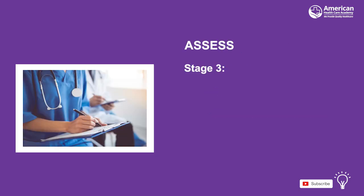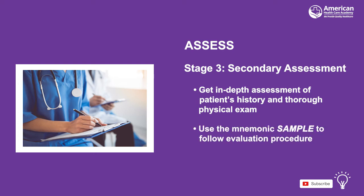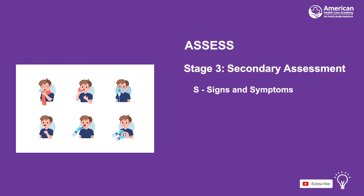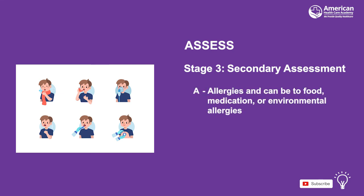The third stage of the evaluation process is the secondary assessment. The goal of the secondary assessment is to obtain a more in-depth assessment of the patient's history as well as a thorough physical exam. The mnemonic SAMPLE can be used to follow the evaluation procedures. S is for signs and symptoms, indicated by problems breathing, altered consciousness, anxiety and agitation, fever, decrease in appetite, diarrhea and vomiting, and bleeding. Finding some or even one of these may indicate a problem. Before treatment is applied, consider A of SAMPLE. A is for allergies — to food, medication, or environmental allergens. Asking parents or guardians for possible allergies can help a PALS provider understand what medications could be provided and what treatments to avoid.